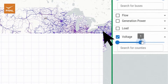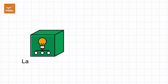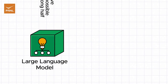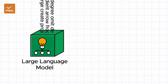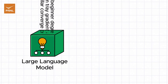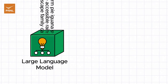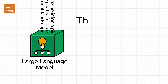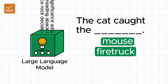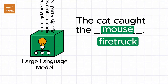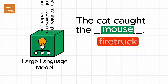ChatGrid runs on a publicly available large language model, a form of generative artificial intelligence that can produce text. The model has been fed vast amounts of English language text and learns about what words appear in context with other words. For instance, to complete the sentence 'the cat caught the blank,' the LLM would learn from analyzing text that the word 'mouse' would be a better fit than 'firetrap.'